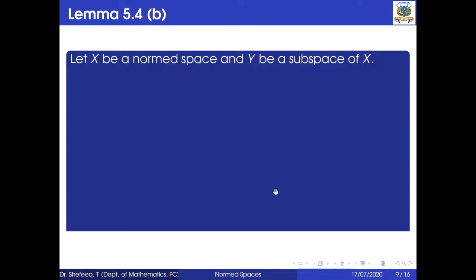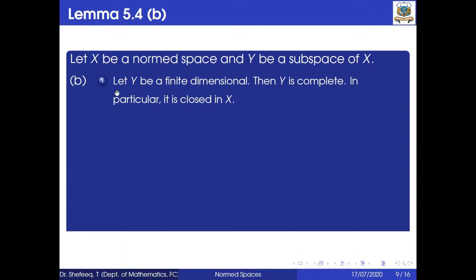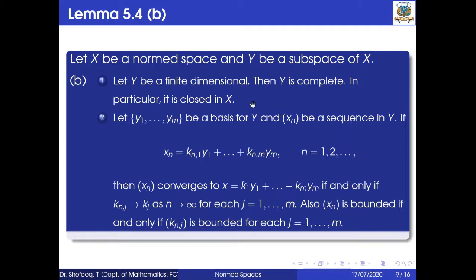Second part of Lemma 5.4: let X be a normed space and Y a subspace of X. This part has two sub-parts. First sub-part: if Y is finite-dimensional, then Y is complete, and in particular it is closed in X. Second sub-part: let y₁, y₂, ..., yₘ be a basis for Y and xₙ a sequence in Y with xₙ = kₙ₁y₁ + ... + kₙₘyₘ. Then xₙ converges to x = k₁y₁ + ... + kₘyₘ if and only if kₙⱼ → kⱼ for each j, and xₙ is bounded if and only if each kₙⱼ is bounded.